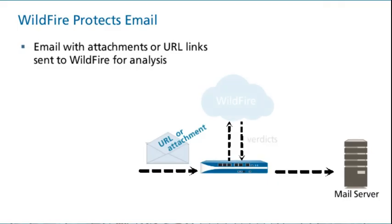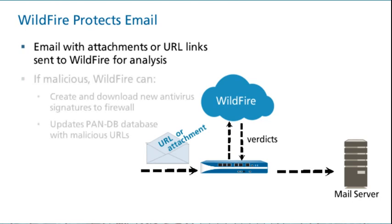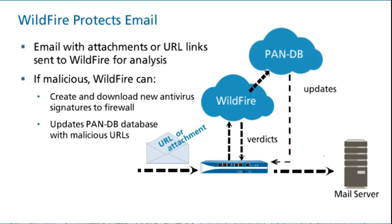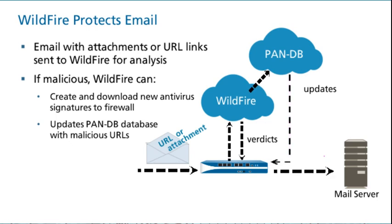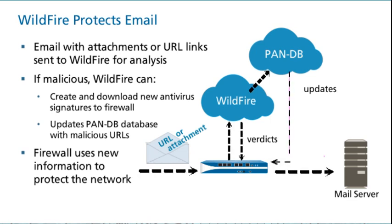The firewall sends email with attachments or URL links to Wildfire for analysis. Neither the firewall nor Wildfire stores or enables the viewing of email contents. When Wildfire detects a malicious file, it immediately creates a new antivirus signature that can be downloaded in minutes by Palo Alto Networks firewalls around the world. This new antivirus signature can help prevent further compromise of other machines in your network and around the world. If Wildfire determines that a URL link included in the email is malicious, it quickly updates the antivirus and the PanDB database. If the URL link was found to be specifically a phishing website, the URL is added to the URL phishing category in the PanDB database.